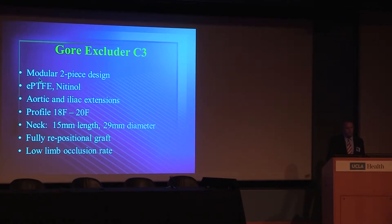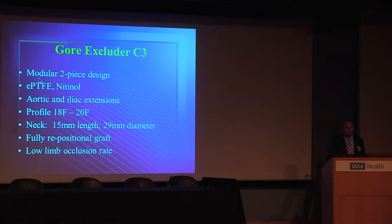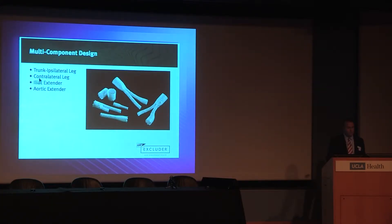The Gore C3 Excluder device is a tried-and-true, modular two-piece device made out of proprietary PTFE material bonded to a nitinol frame. It has aortic and iliac extenders and goes through a standard 18 to 20 French sheath delivery system. The IFU is for a 15-millimeter length and a 29-millimeter diameter neck. The unique component is that it is fully repositionable — the only fully repositionable device that can be moved either cranially or caudally, with deliverable limbs including ipsilateral trunk and leg, contralateral legs, and extenders for both iliac and aortic components.